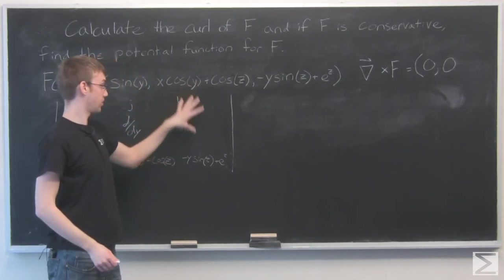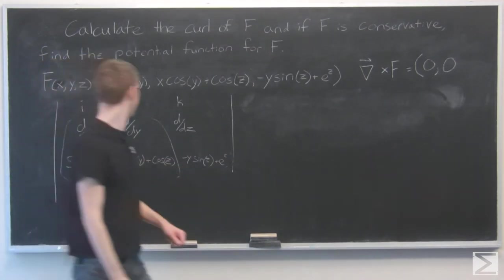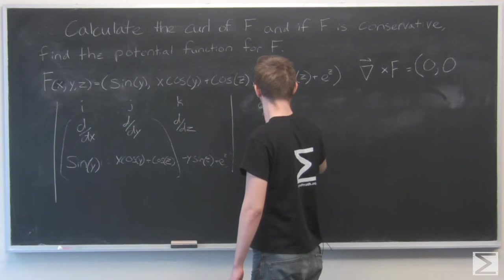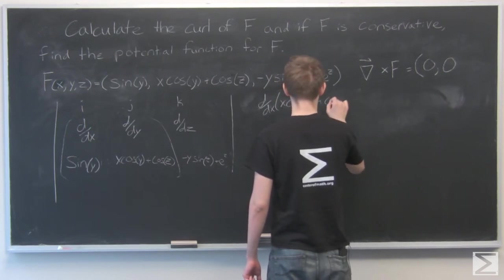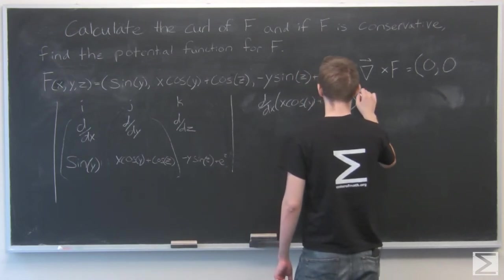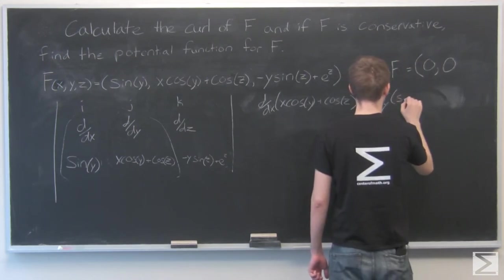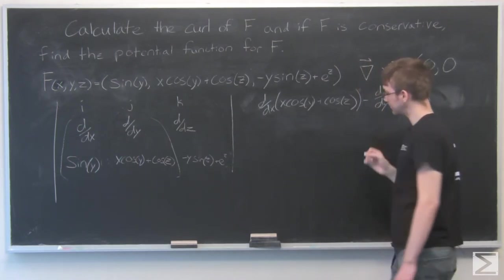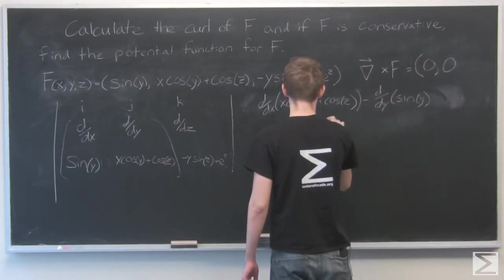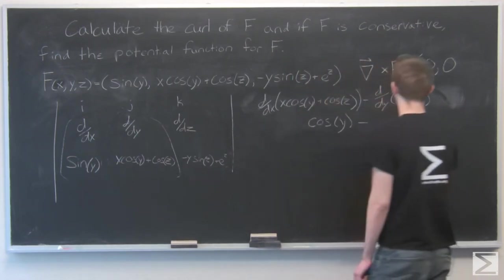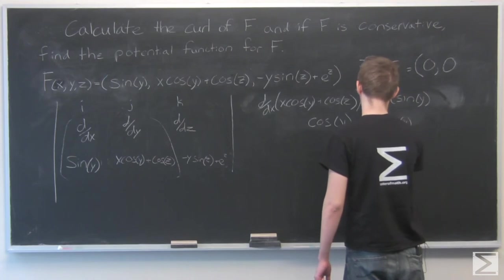Finally, we cross out the k-th row and the k-th column and take the determinant of this 2 by 2 matrix. We have d/dx times (x cos(y) + cos(z)) minus d/dy sin(y). The derivative of x cos(y) — cos(y) is a constant, x drops out — so it becomes cos(y). And the derivative of sin(y) with respect to y is cos(y). And that equals 0.